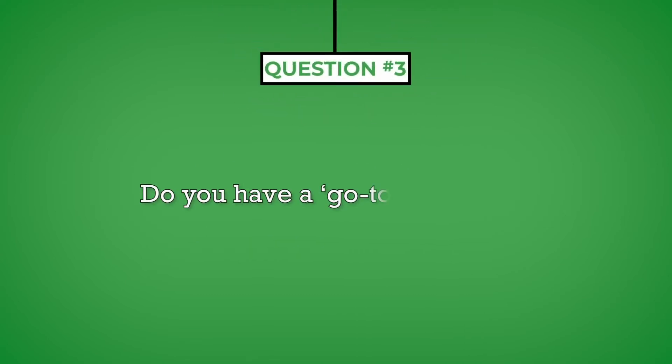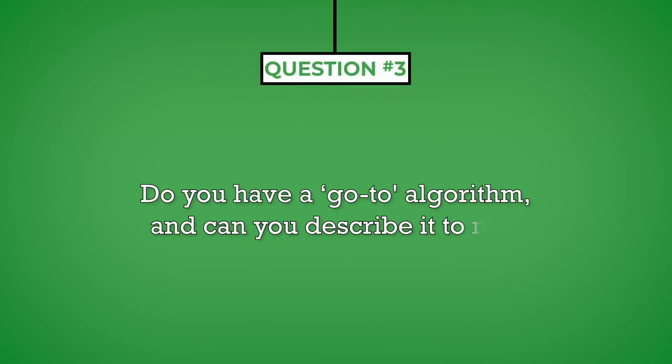Question number three: Do you have a go-to algorithm and can you describe it to me? The purpose of this question is not to understand your favorite algorithm, but rather to see how you communicate and if you are able to explain complex topics in simple language. During most interviews, you will be speaking with someone familiar with the job technicalities. However, on some occasions you may interview with someone from the personnel department or other business units. Being able to explain complex concepts in simple, easy to understand language demonstrates your ability to work cross-functionally in the organization.